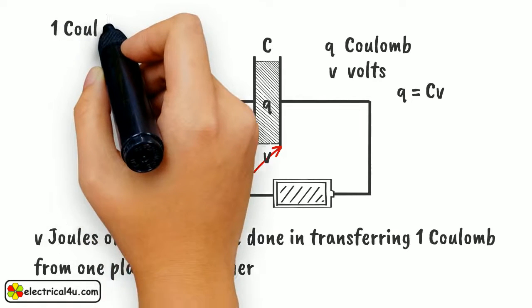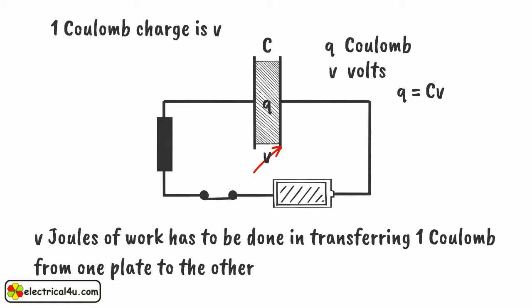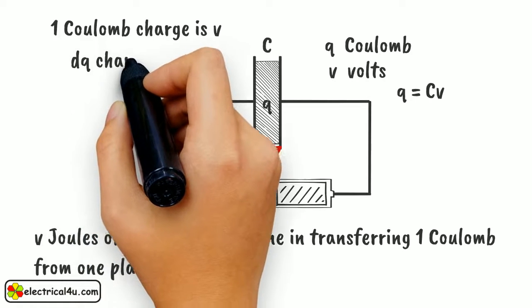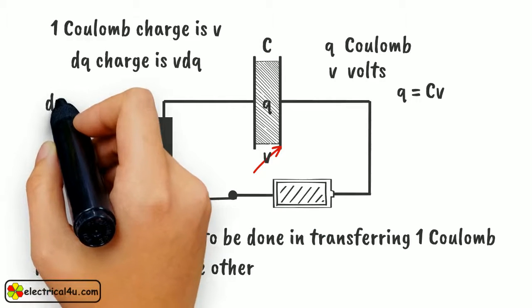That means work done for transferring one Coulomb charge is V. Hence, work done for transferring dQ charge is VdQ. This work done can be written as dW.